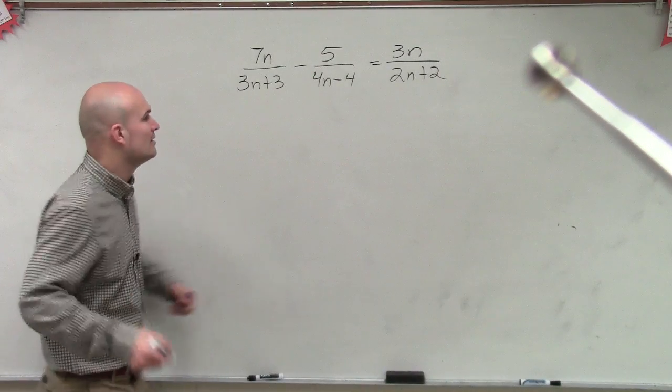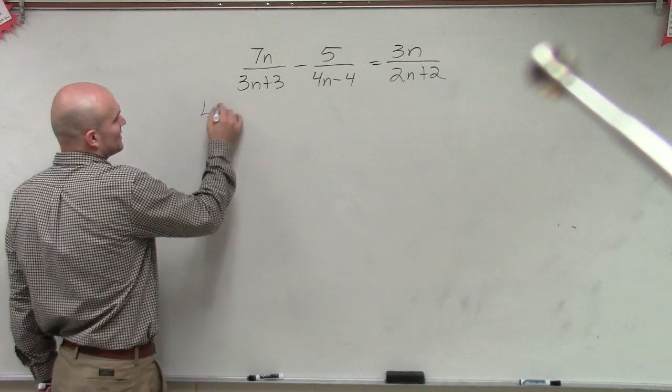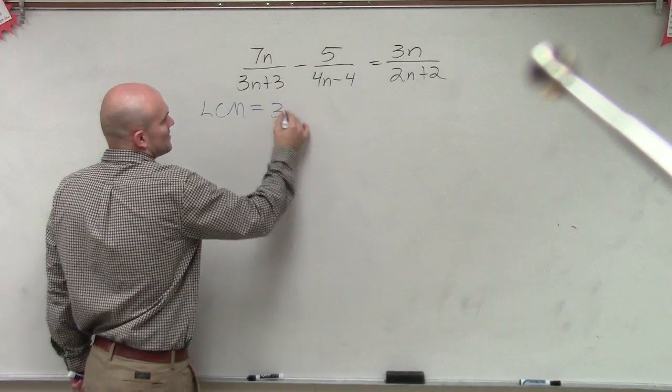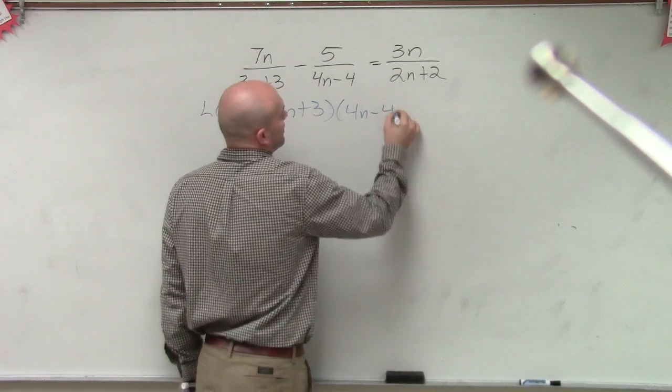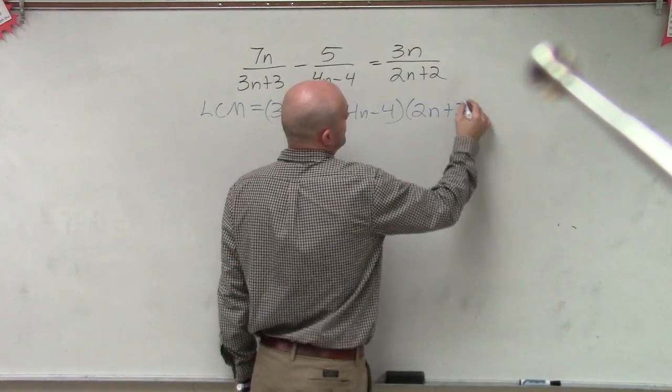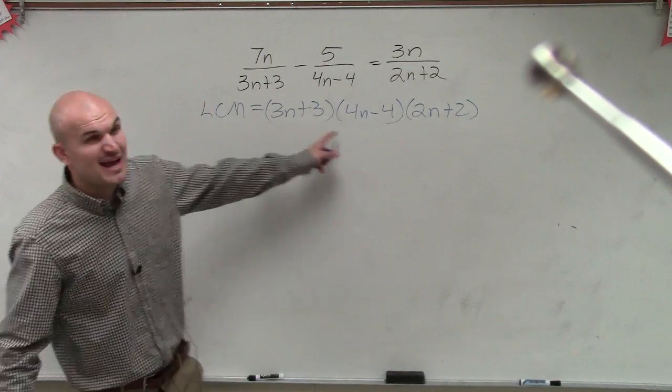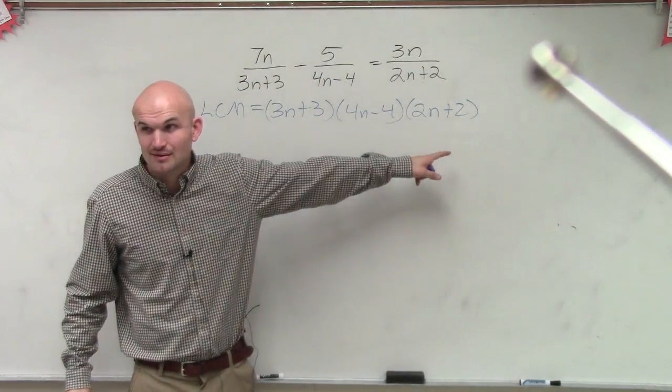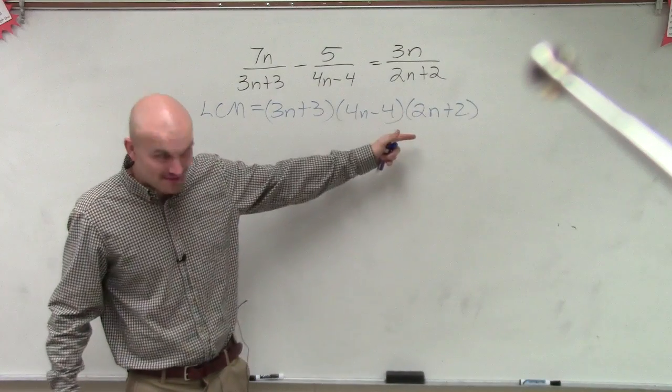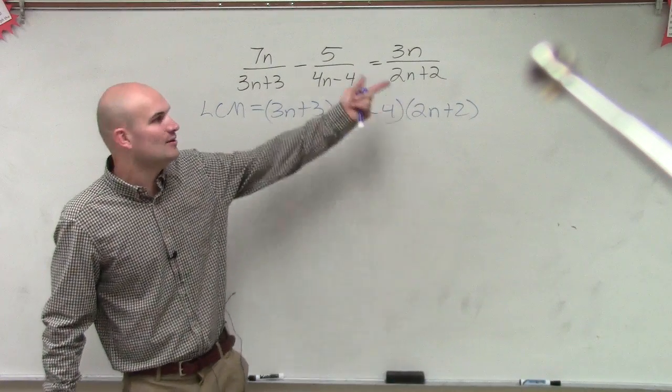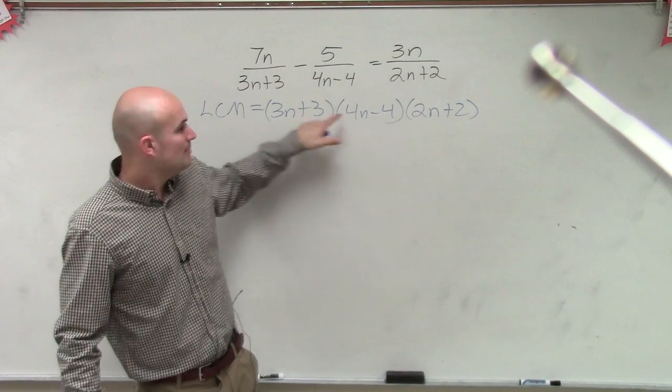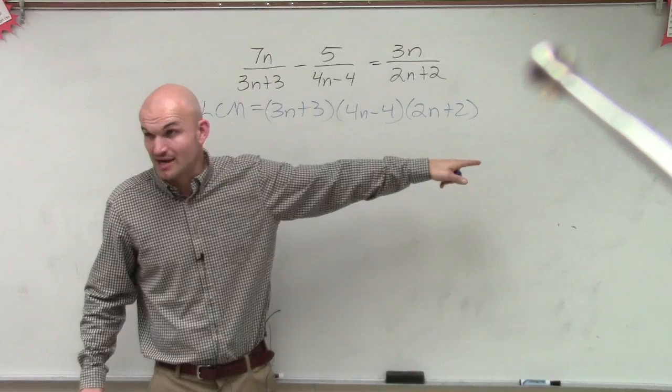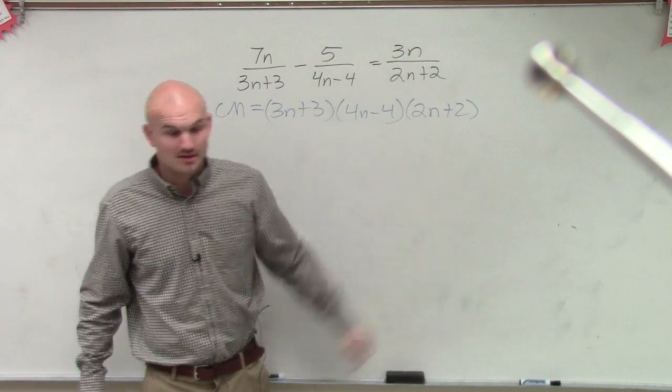Because, ladies and gentlemen, if students do not factor, your LCM looks like this: 3n plus 3 times 4n minus 4 times 2 times n plus 2. Do you guys want to multiply every single term by that? Or even worse, multiply the top and bottom by every term. This is a lot to multiply everything by, isn't it?